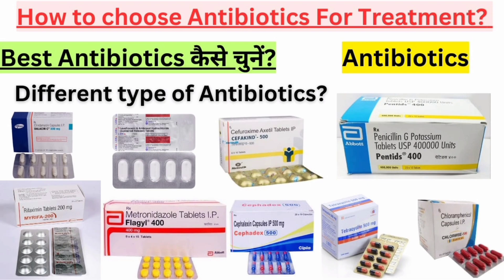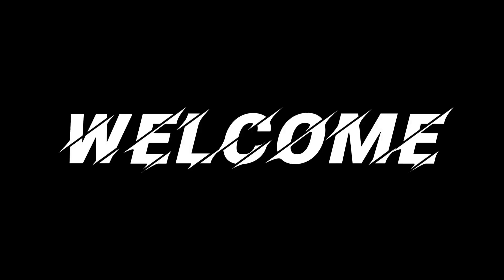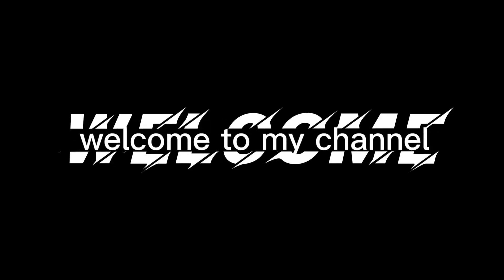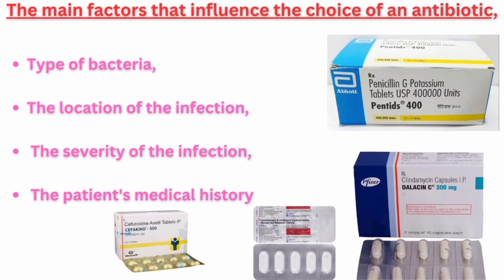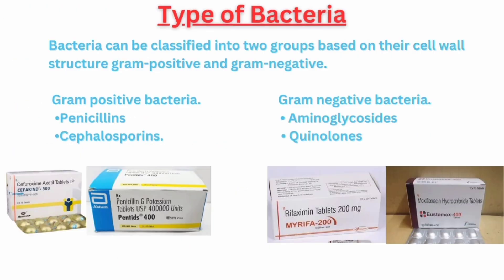So how do you know which antibiotic to use? The main factors influencing the choice of an antibiotic include the type of bacteria, the location of the infection, the severity of the infection, and the patient's medical history. The first factor to consider is the type of bacteria that is causing the infection.